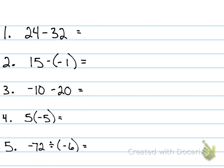Alright, everybody together, what is 24 minus 32? It is negative 8. Why is my answer negative? 32 is my larger absolute value, and it's negative. 15 minus negative 1, what happens to my double negative? Changes to a positive, and what's my answer? 16.